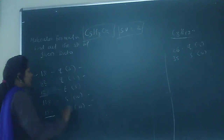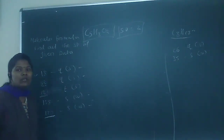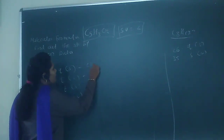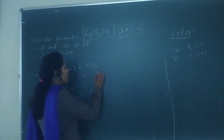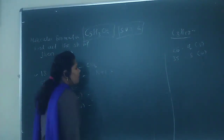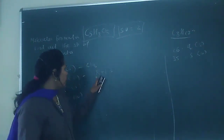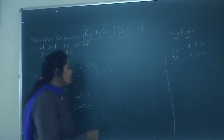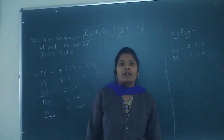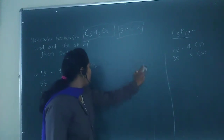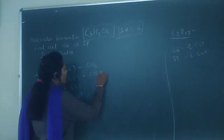Now looking at the carbon-13 data: the value at 18 is a quartet. Using the N+1 rule, where N is the number of hydrogens directly attached to the carbon, 3 hydrogens + 1 = 4, giving a quartet. So the carbon at 18 is a CH3. Similarly, at 52 we also have a quartet, so that is another CH3 group.